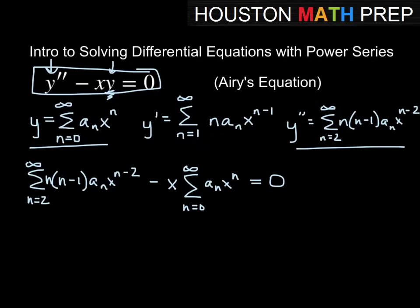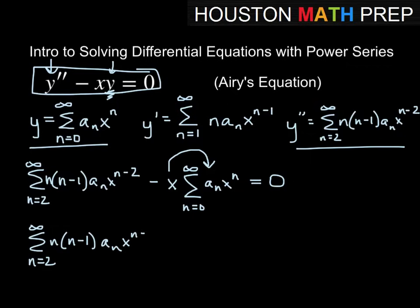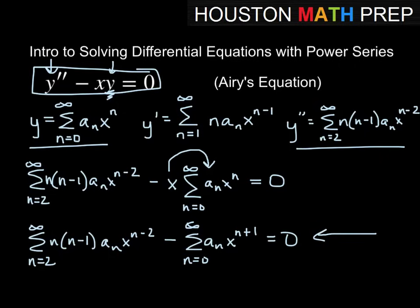Now we need to shift the index of a power series. First, we distribute the x into the second power series, which raises its power by 1. So the first series stays the same, and the second series becomes x to the n plus 1, giving us our starting point for adjusting powers and indices.